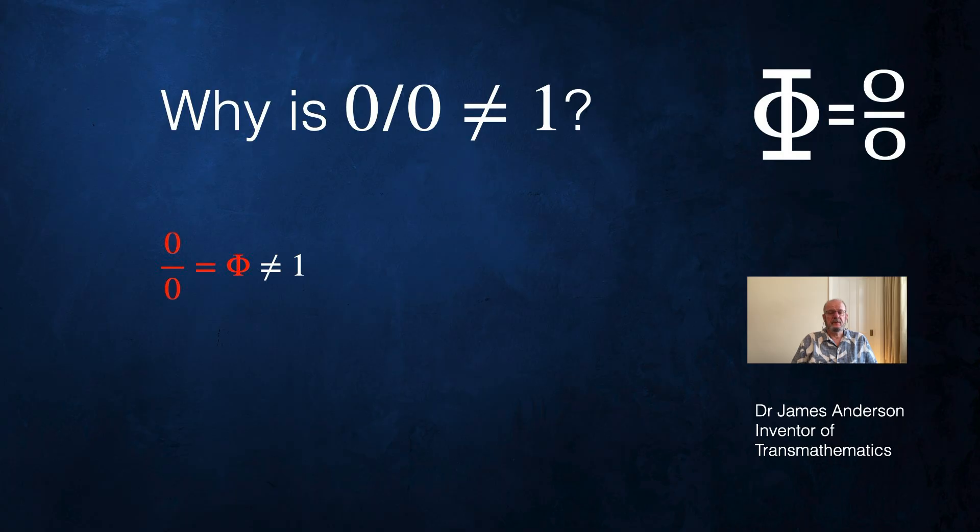Let's start off with zero over zero equals nullity. Nullity is not equal to one, so zero over zero is not equal to one. That's one reason.